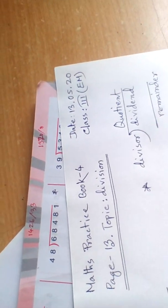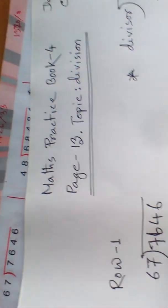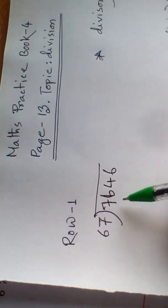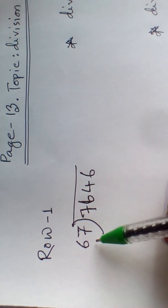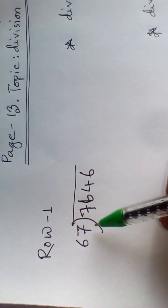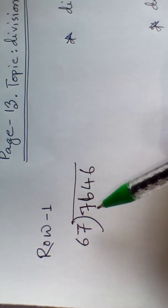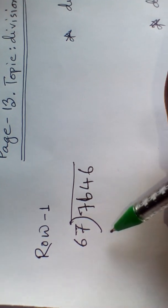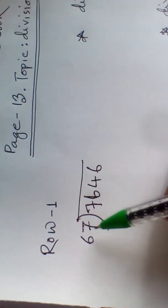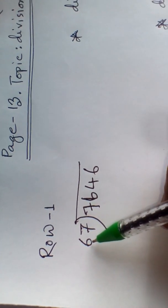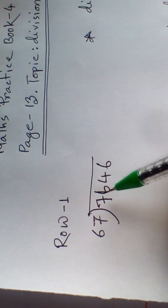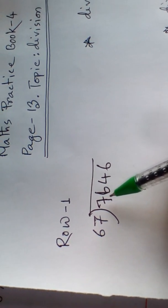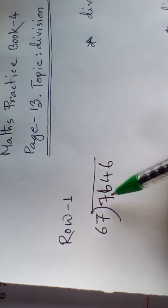Now we solve problem number 1, row 1. Here, the dividend is 7,646 and the divisor is 67. At first, calculate from the left side. Count the digits in the divisor — there are two digits, number 1 and number 2. So we take two digits from the dividend: that is 7 and 6, giving us 76. How many times of 67 is 76?